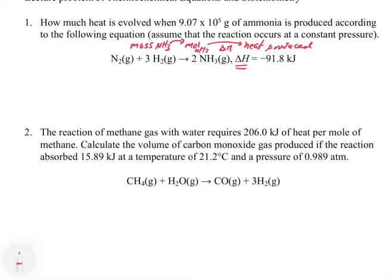This one says 9.07 times 10 to the fifth grams. And we have to get this from mass to moles. So we're going to use the molecular mass. So the molecular mass of NH₃ is 17.0 grams for every one mole of NH₃. So now we're in moles of NH₃. And now we have to use the delta H. We're going to look at the stoichiometric coefficient and we see that it's a 2. So we know that for every 2 moles of NH₃, we're getting minus 91.8 kilojoules of heat energy.